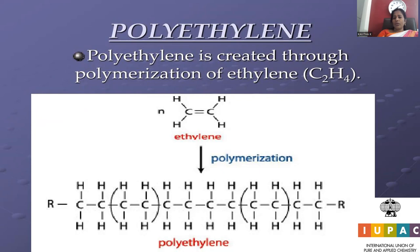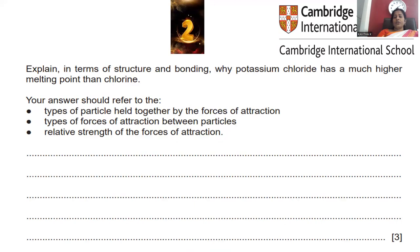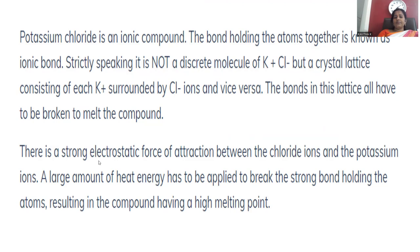We now move to question number two, collected from Cambridge Assessment International Education: Explain in terms of structure and bonding why potassium chloride has a high melting point compared to chlorine. To answer this, we consider: types of particles held together by forces of attraction, what forces exist in potassium chloride versus chlorine, and the relative strength of those forces.